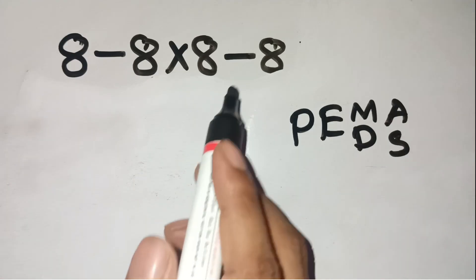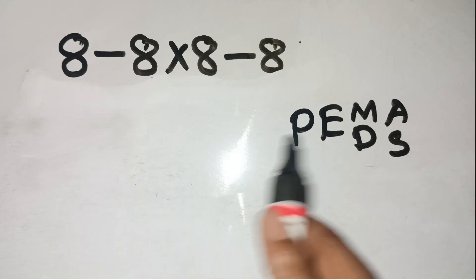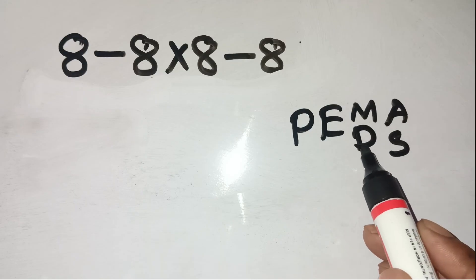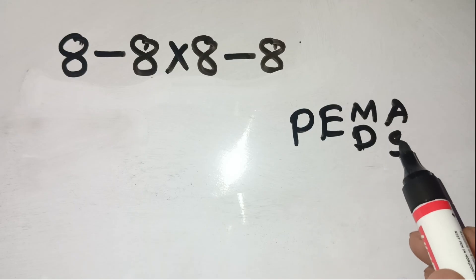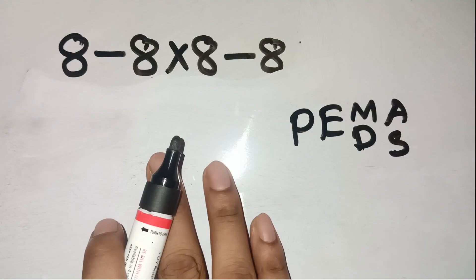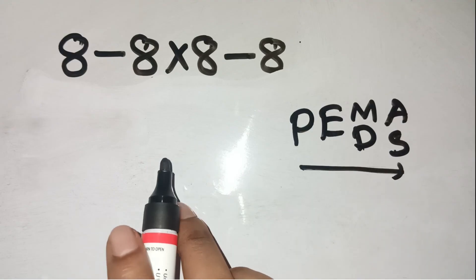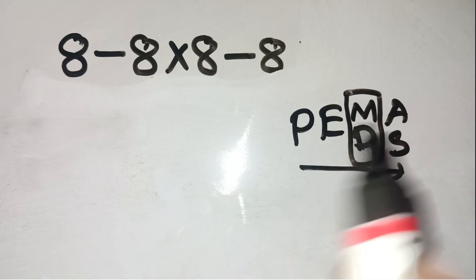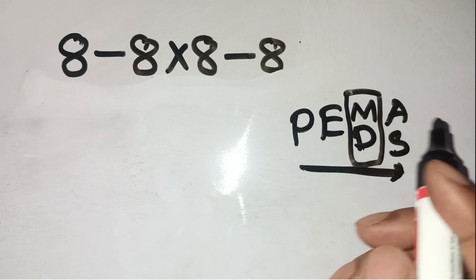Let's solve this properly using PEMDAS, which stands for parentheses, exponents, multiplication, division, addition, and subtraction, in that exact order. And remember, multiplication and division have equal priority. You solve them from left to right, just like how you read.